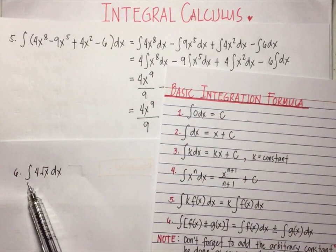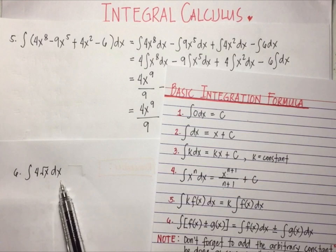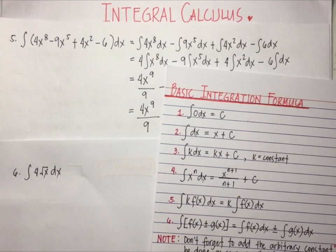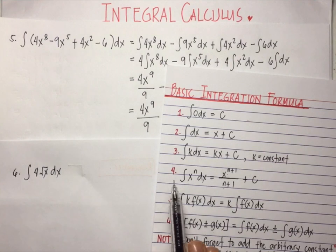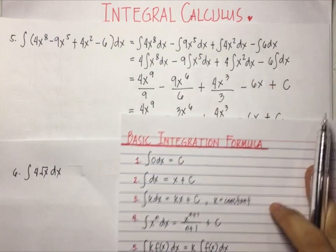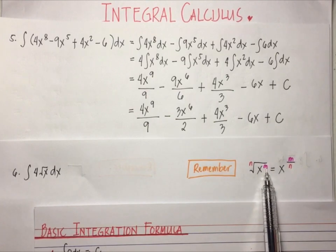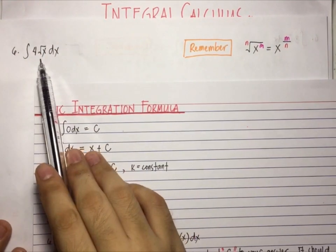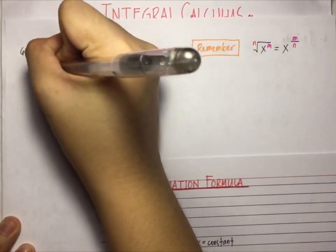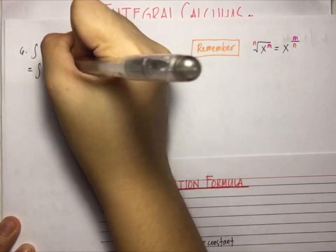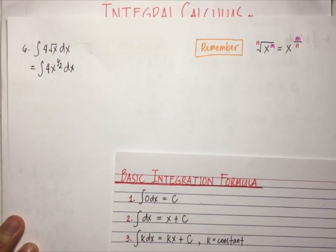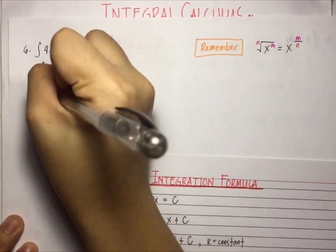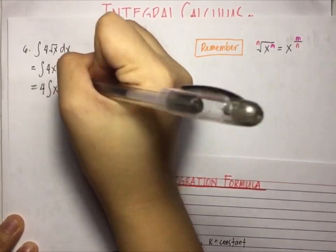For number 6, find the integral of 4 times the square root of x dx. Don't be intimidated by this problem. Though no radicals appear in any of the previous theorems, we can always transform radicals into their exponential form and then apply the power rule, theorem number 4. Remember that the nth root of x raised to m is equal to x raised to m over n. So we rewrite square root of x as x raised to 1 half. We have 4 times the integral of x raised to 1 half dx.